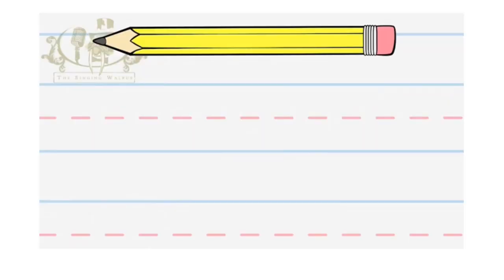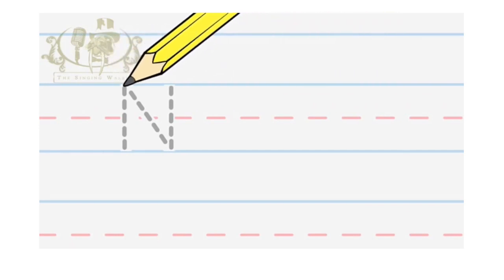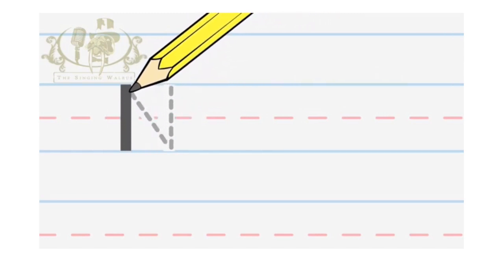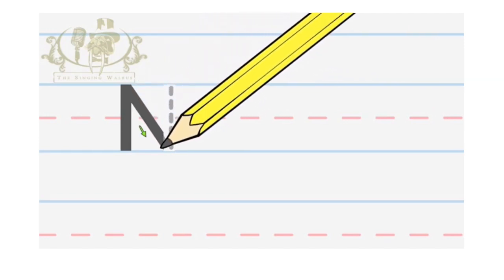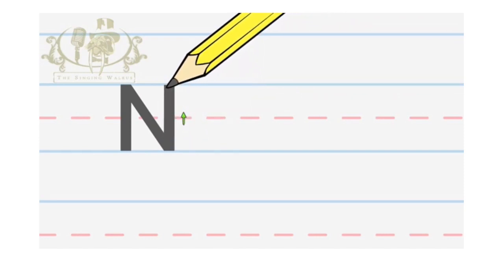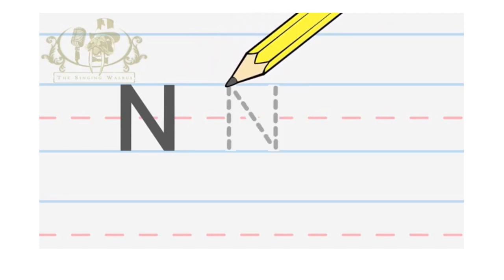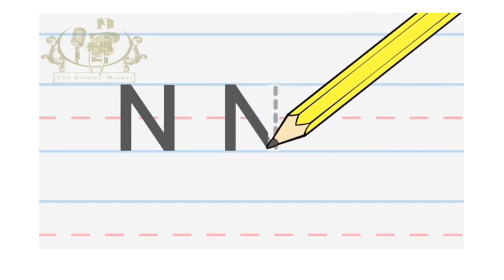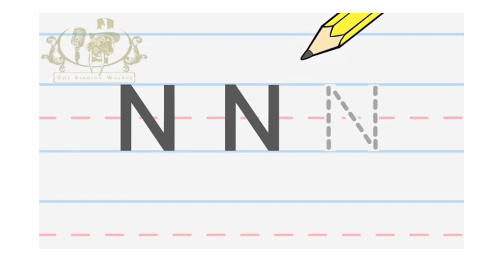First, we'll write the capital N — that's the big N. Start at the top and make a line down. Then, go back to the top and make a line down to the right. Now, make one more line back up to the top. Let's try it again. Down. Down to the right. Up. Now, you try. Now, check if you did it right.